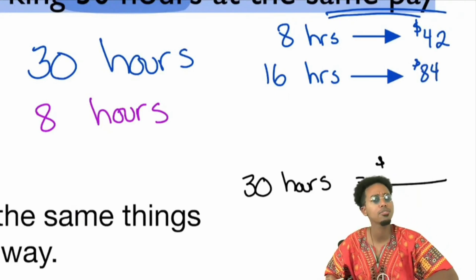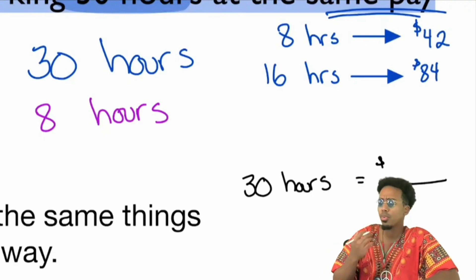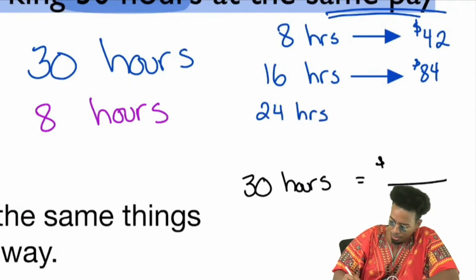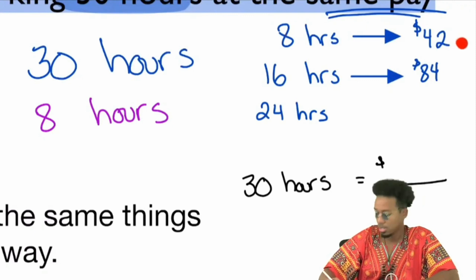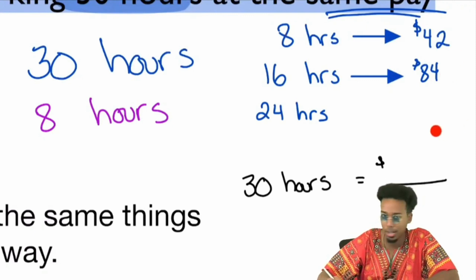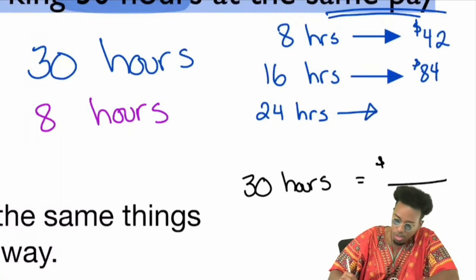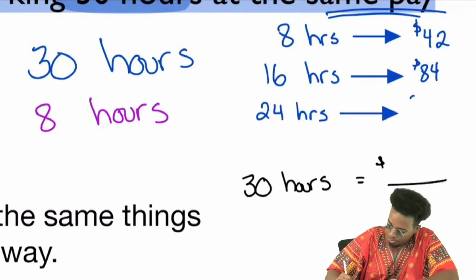We're doing this a very slow, frustrating way. But if we add another eight hours to get to 24 hours — stacking another eight — on the money side, stack another $42, stack another $42. At 24 hours of work, how much should we expect to get paid? That would be $126.